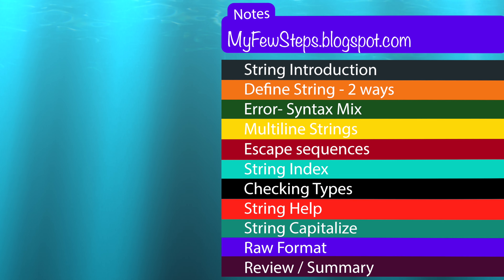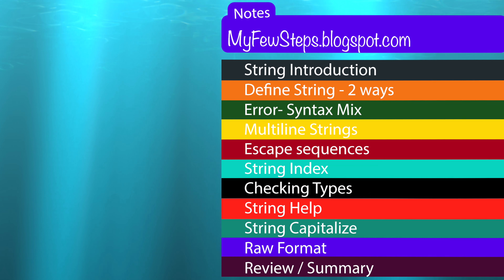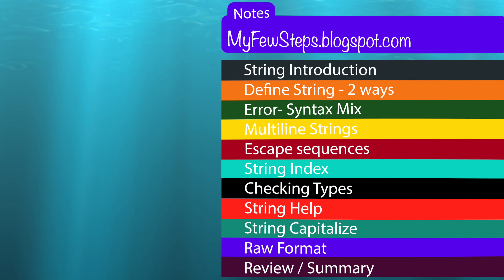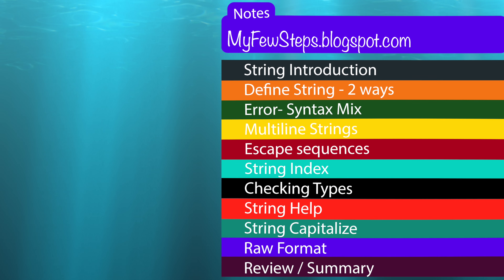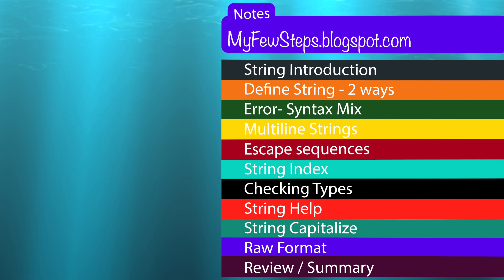We will also cover escape sequences and string indexing to access a particular index position value. We will use the default Python help to know more about strings, then use some methods on strings - capitalization to change an existing string to capital format. After that we will check the raw format of string, and finally we will discuss the review and summary of all the topics. Let's get started.